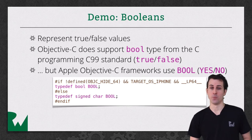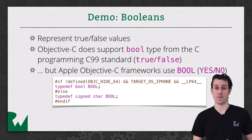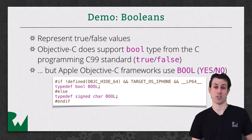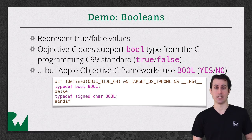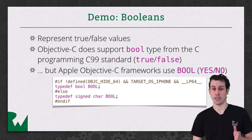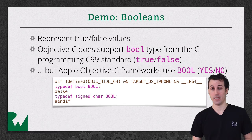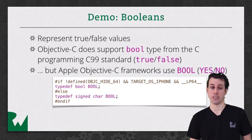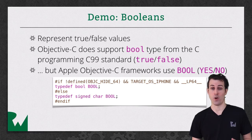The tricky thing about capital BOOL is if you look to see how it's defined, it's defined differently on a 32-bit OS versus a 64-bit OS. On a 32-bit OS, it's defined as a signed character. On a 64-bit OS, it's defined as the built-in Boolean data type. This means that potentially a capital BOOL on a 32-bit OS could have more values than just zero or one — it could have the full range of signed character values, so you just have to be aware of that. The only thing you should treat as NO or false is zero. Anything else should be treated as true.